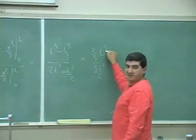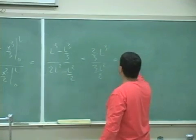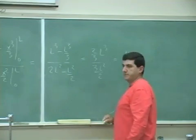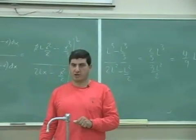L squared, L cubed, cancels. You're left with 1L. And you're left here with 4 over 9L. So it's to the left of halfway mark.